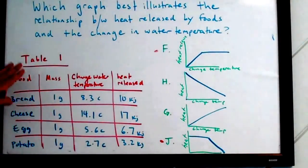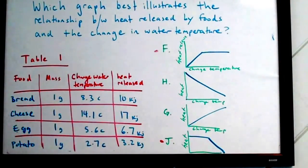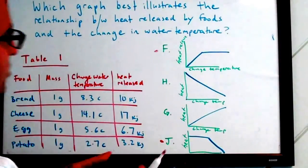So what you have to do is go to Table 1, make sense of the information, and translate this information from the table to a graph.